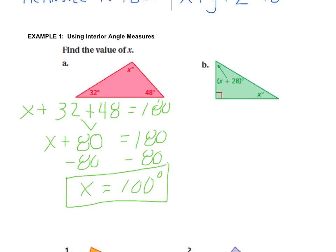For triangle B, remember that the box tells me I have 90 degrees at that angle. Don't forget it because you don't see a number there. If I add together my angles, I have 90 plus X plus (X plus 28), which equals 180. When I combine like terms, X and X give me 2X. 90 plus 28 is 118.